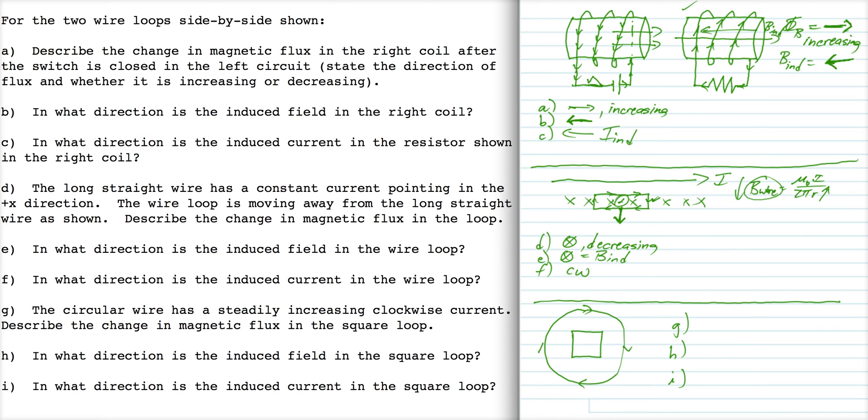Finally, we have a steadily increasing current in the outer loop. What happens to the flux in the inner loop? The magnetic field associated with this outer circular loop points into the page. This square loop is immersed in a field that points into the page and that field is increasing, so the magnetic flux is into the page and increasing.